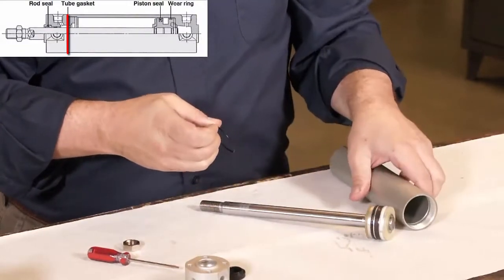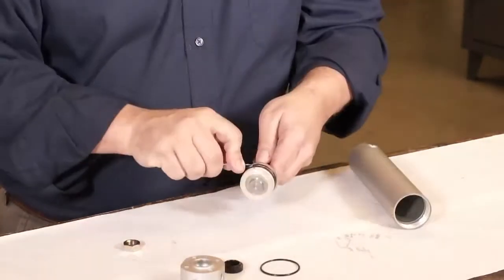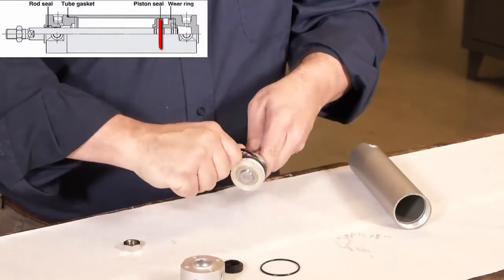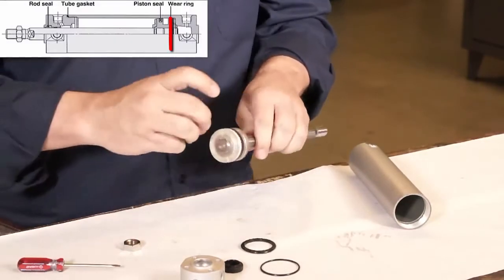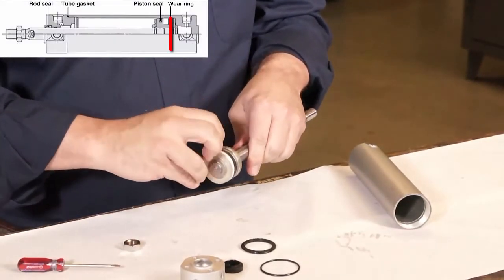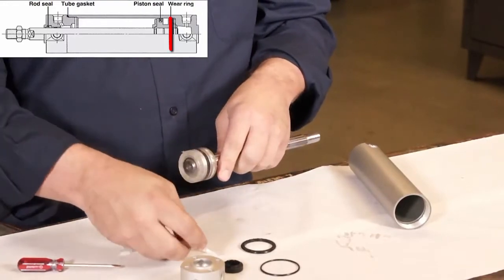Next, remove the body seal. Also, check it for the same type of damage. Then, remove the piston seal. Check it for damage as well. Next, remove the wear ring that keeps the piston centered in the body. Notice that the wear ring has a split in it. That's normal.